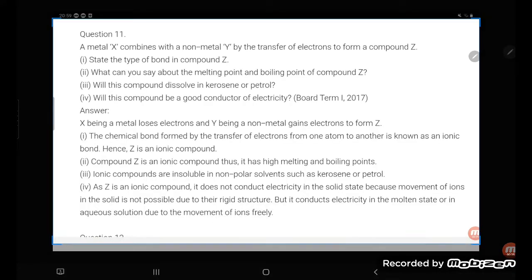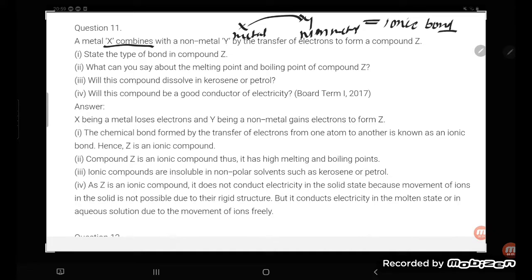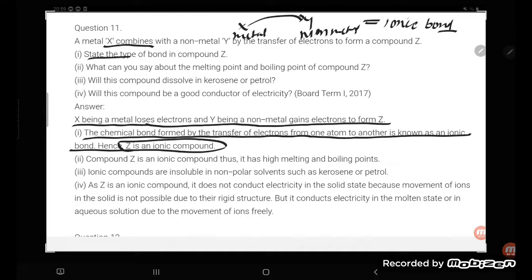If X is a metal and Y is a non-metal, the bond formed by transfer of electrons is an ionic bond. X being a metal loses electrons and Y being a non-metal gains electrons to form Z. The chemical bond formed by the transfer of electrons from one atom to another is known as an ionic bond. Hence Z is an ionic compound.